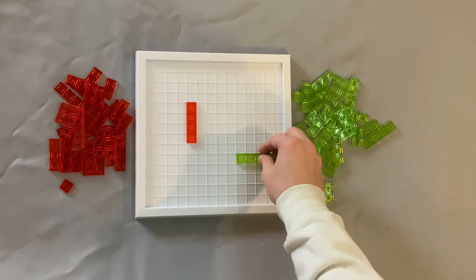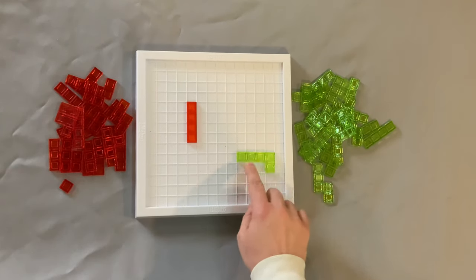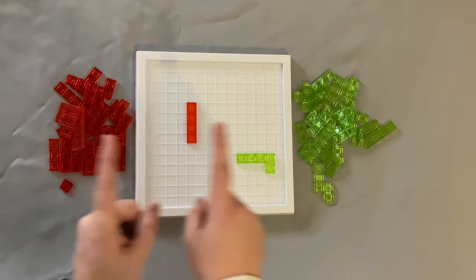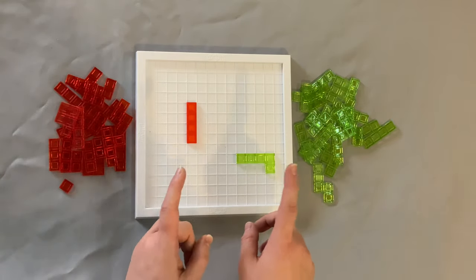Now player two is going to take one of their pieces and they're going to place it as long as it's touching the other starting space right there. Players are going to take turns laying down one piece at a time.